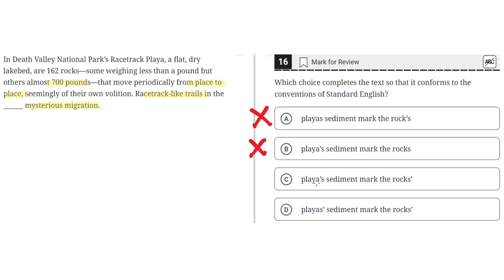Answer C: 'playa's apostrophe s, sediment marks the rocks' apostrophe after the s.' This seems to be correct, because it properly shows that there is one playa and it has its sediment mark, and that there are multiple rocks and they each have their own mysterious migration. So C seems to be the correct answer.